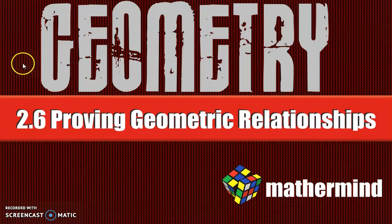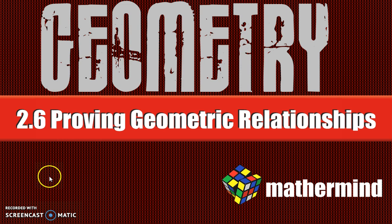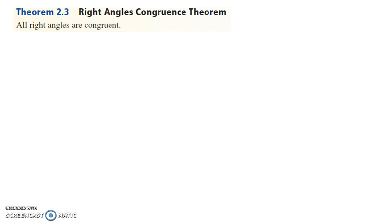And here we are back again with a little bit of geometry. Chapter 2, Section 6: Proving Geometric Relationships. Looking at a few different types of proofs in this section. First, some theorems.